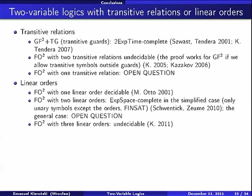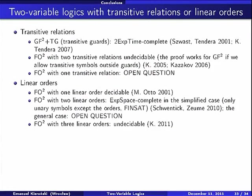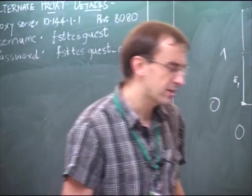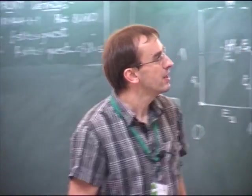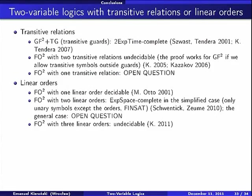Another possible kind of relations which may be worth investigating are linear orders. They're also natural, of course. And FO2 with one linear order is decidable. It was shown by Martin Otto sometime 10 years ago. And it is quite easy construction. If we have two linear orders, the situation is much more complicated. There is a result by Schwentick and Zeume, but this is for the restricted case in which we have only two binary predicates, those linear orders and no other binary predicates. And their argument works only for finite decidability. Up to my knowledge, the general case is also open here.